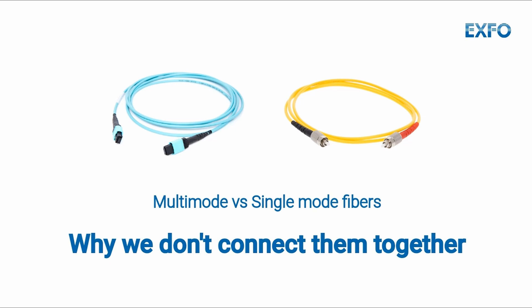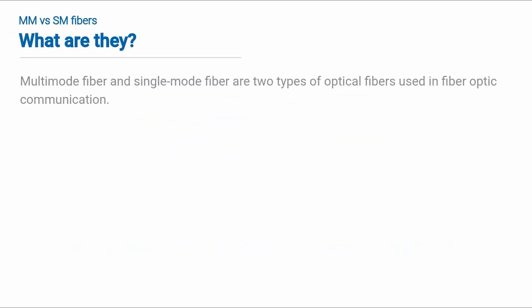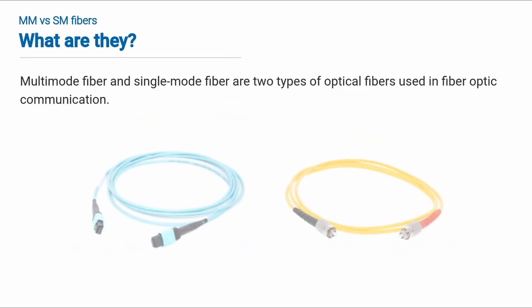Multi-mode fiber and single-mode fiber are two types of optical fibers used in fiber optic communication. When we say mode, we are referring to the optical path the light can follow in the fiber. We could almost call them multi-light path versus single-light path fibers.